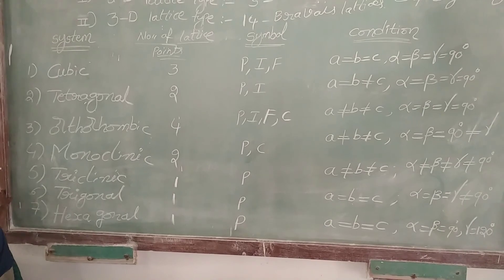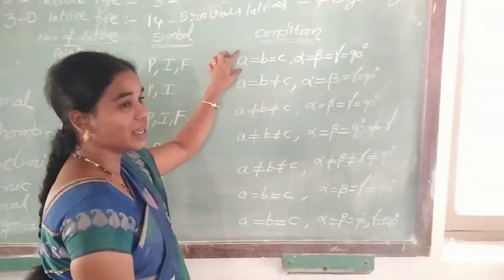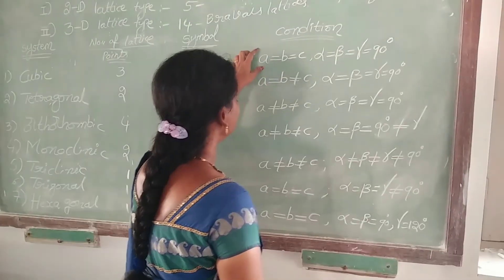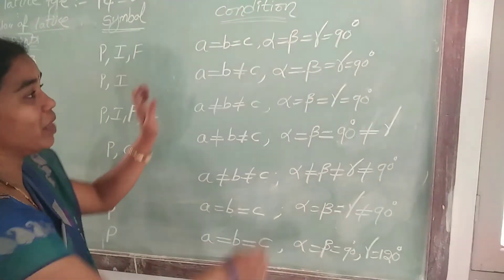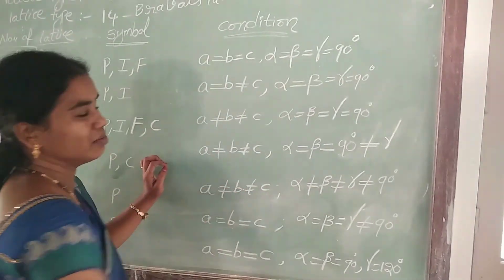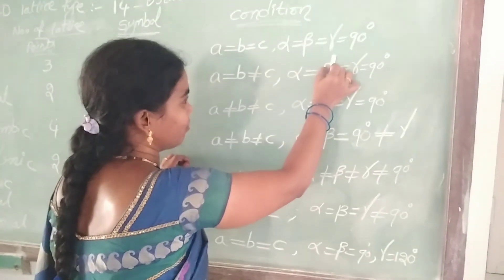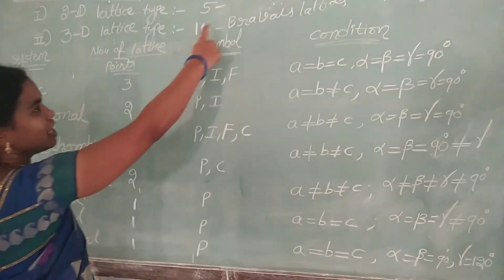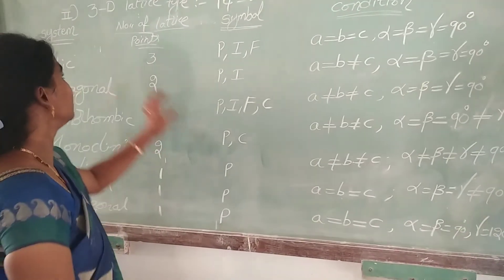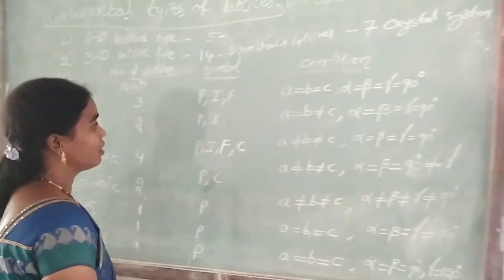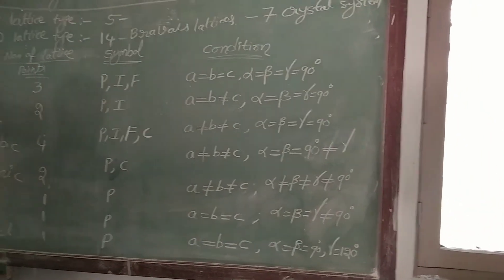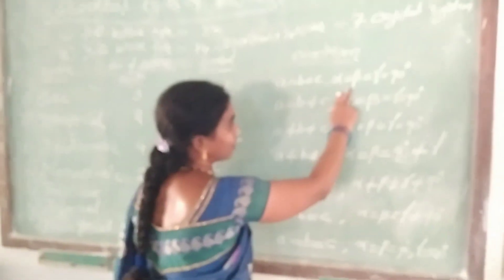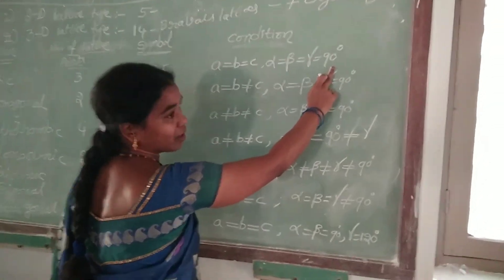These 7 crystal systems are divided based on the conditions of basic lattice parameters — that is, the conditions between primitives A, B, C and the interfacial angles alpha, beta, gamma. Based on these conditions, the 7 types of crystal systems are divided from the 14 Bravais lattices in 3-dimensional lattice types. The first one, cubic crystal system, has the condition: A is equal to B is equal to C, and the interfacial angles alpha is equal to beta is equal to gamma is equal to 90 degrees.